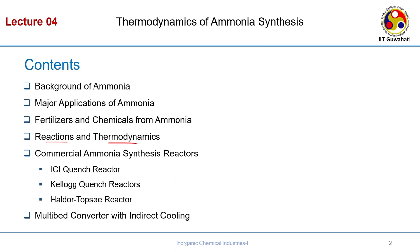You must be aware of ICI — Imperial Chemical Industries — which has a quench reactor, and Kellogg's also makes quench reactors. Haldor Topsoe is a very famous company; we will take up much more detail regarding their catalyst formulation and reactor formulation later when we discuss homogeneous and heterogeneous catalysis. Finally, we will see an example of a multi-bed converter with indirect cooling. There are two types of cooling required because it is an exothermic process: direct cooling and indirect cooling.